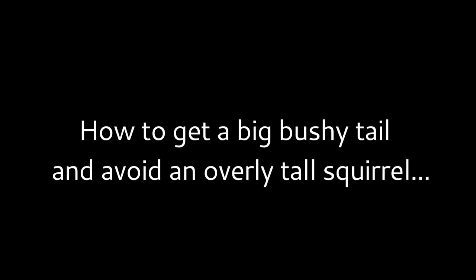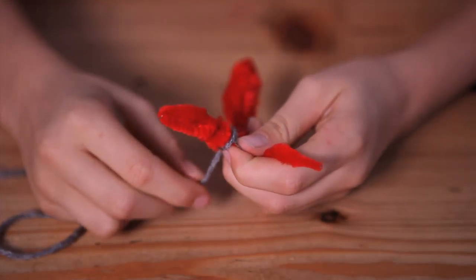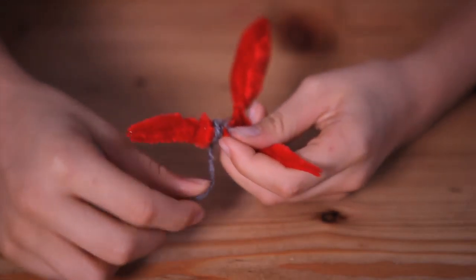Alright, so first, so that the tail doesn't fall off, I do about five wraps around the body.